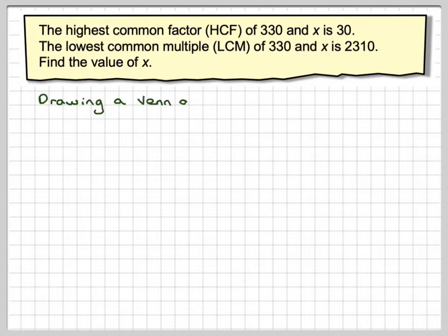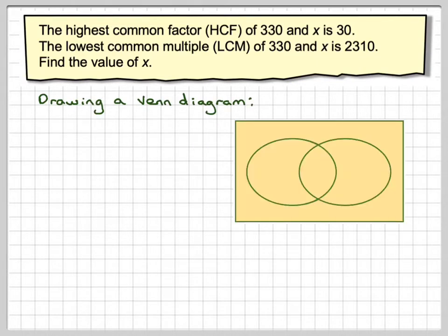Probably the best way to proceed with this type of question is to draw a Venn diagram. So here we have a Venn diagram. Let this circle here represent the number 330, and then this number here represent the number x.